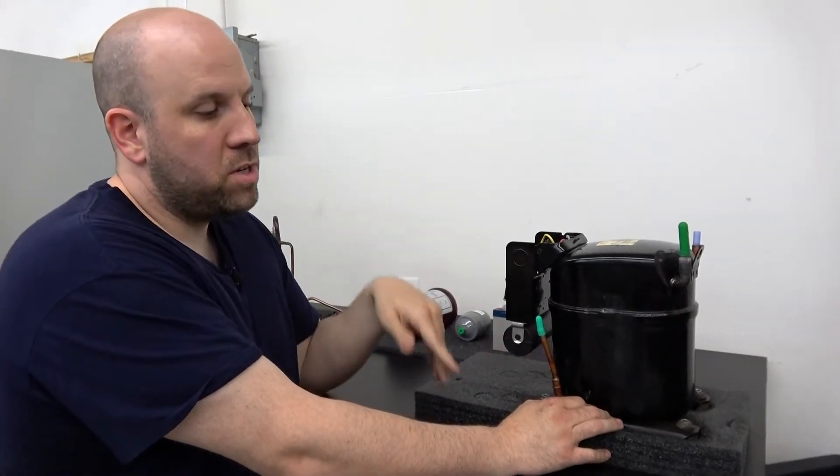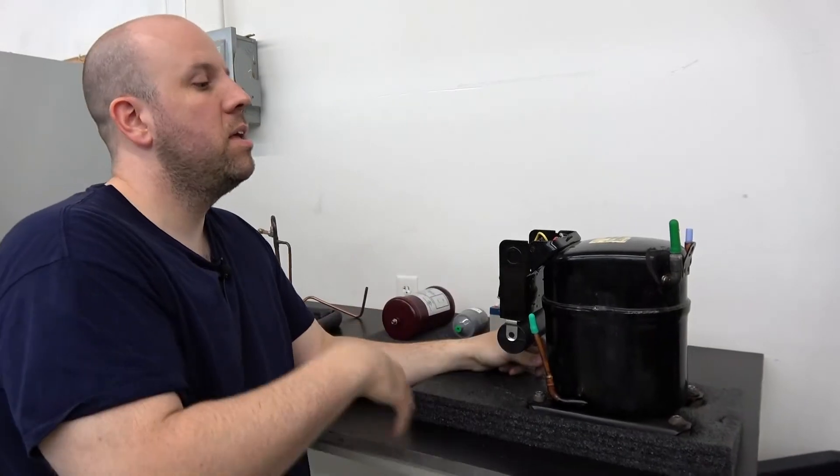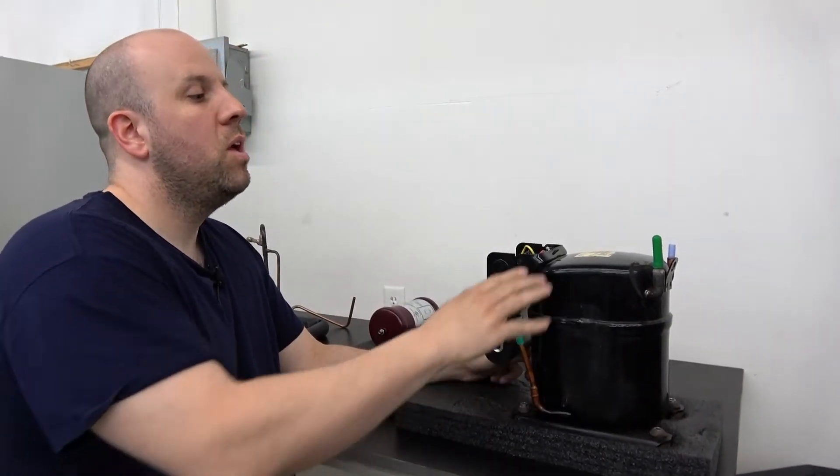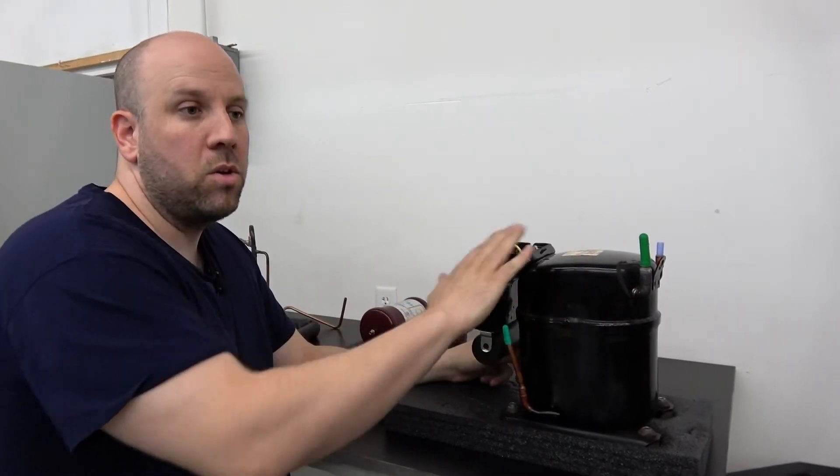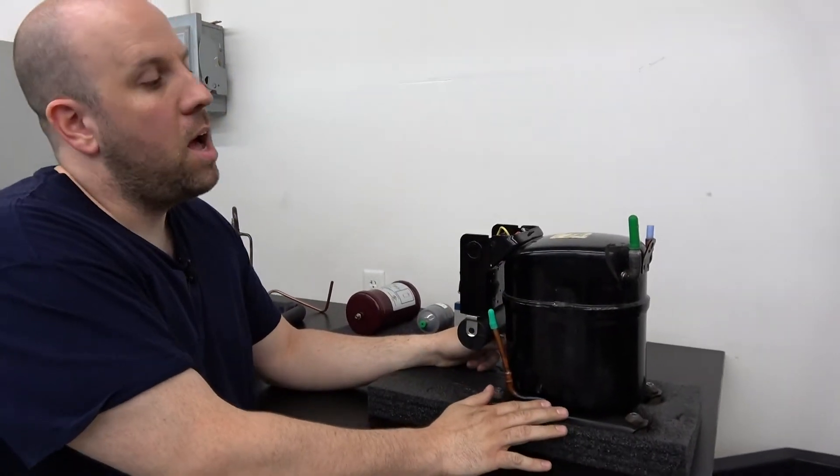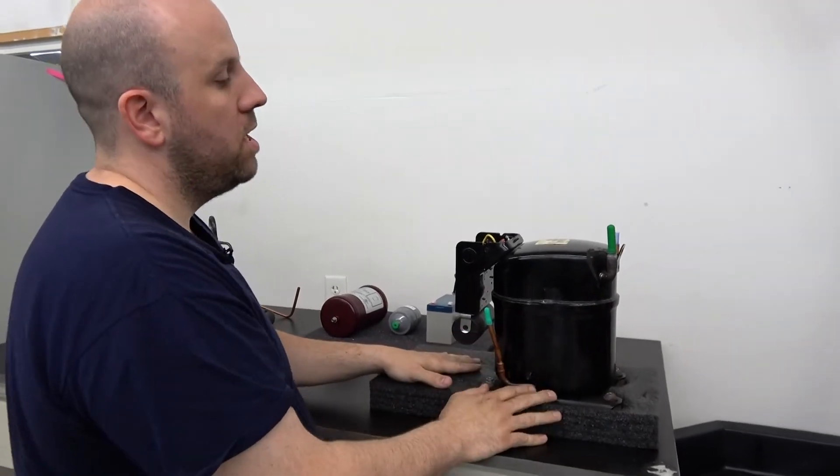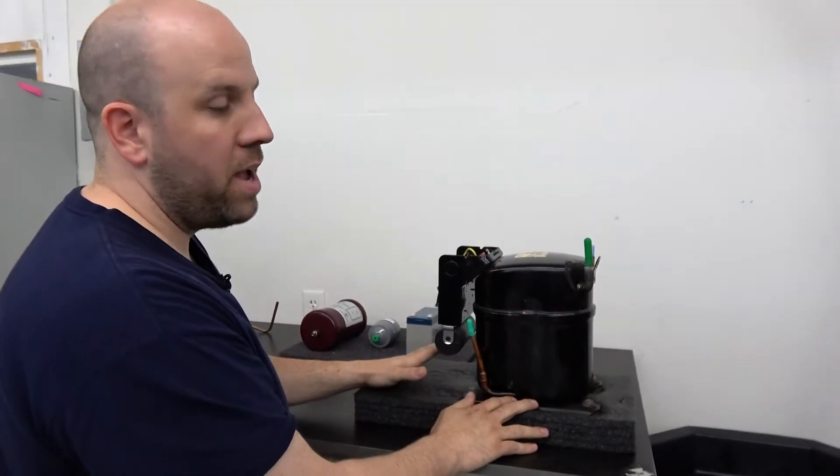So we run them, get them hot, dump them out and put new oil in. We run them, keep running them, dump it, keep running them, dump it until the oil coming out of here looks like new oil. At that point it's flushed. We consider that flushed out, fill it up, and it's ready to get put back in.